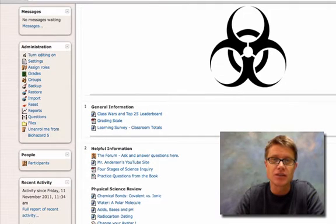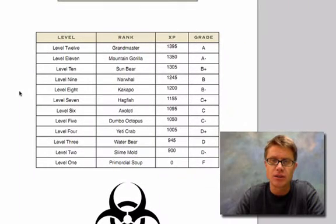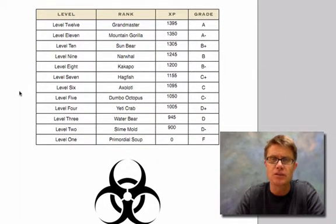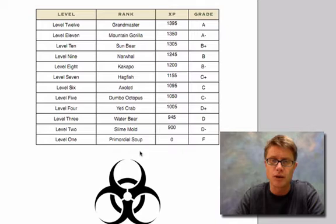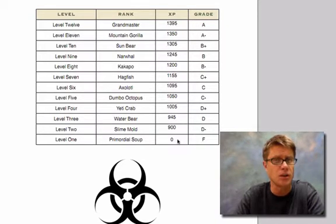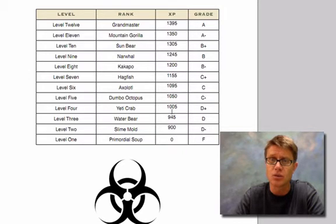I also have a grading scale — I nabbed this idea from Lee Sheldon. Instead of giving kids an A at the start of the year and having them lose points, they all start at level one with zero points. Everything they do in the class gives them experience points, and whatever points they accumulate at the end of the semester becomes their grade.